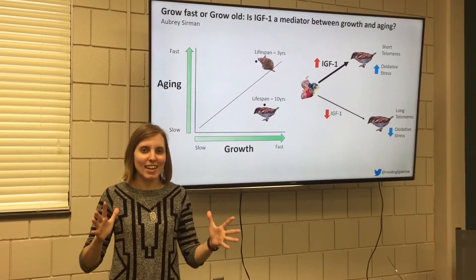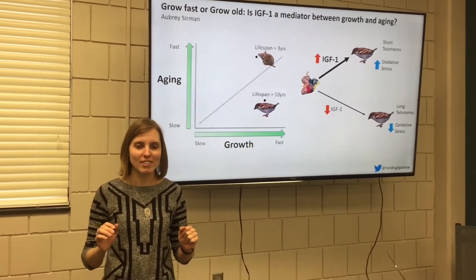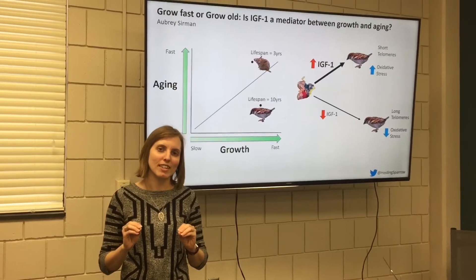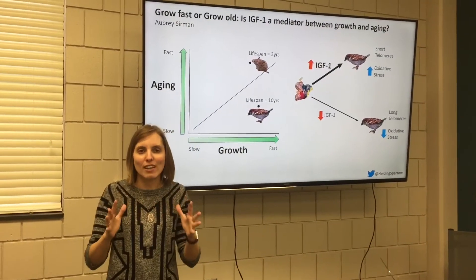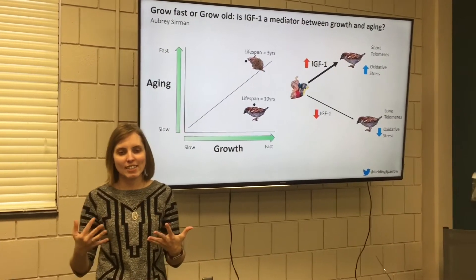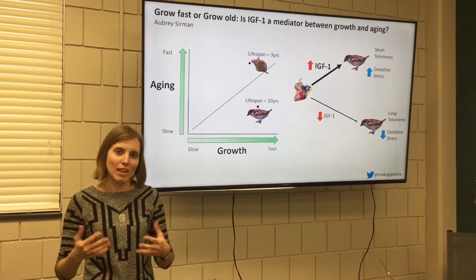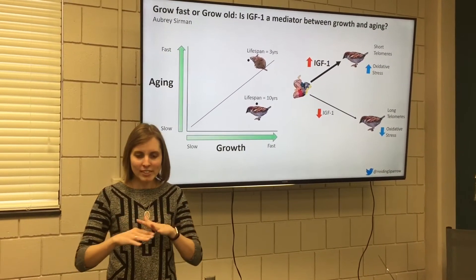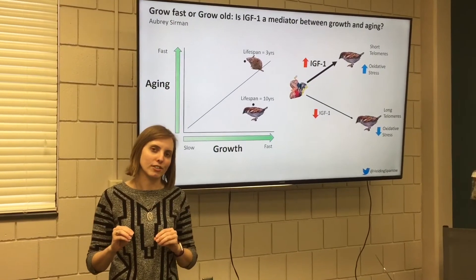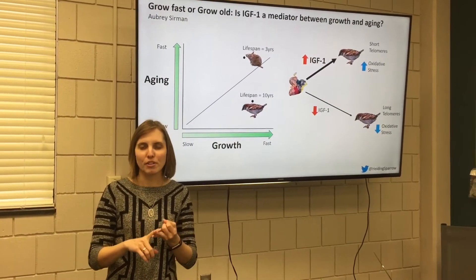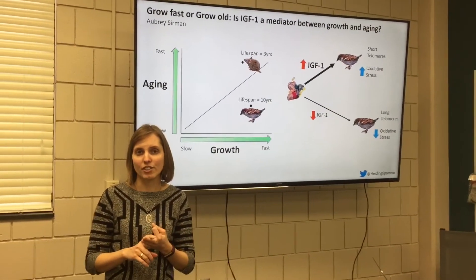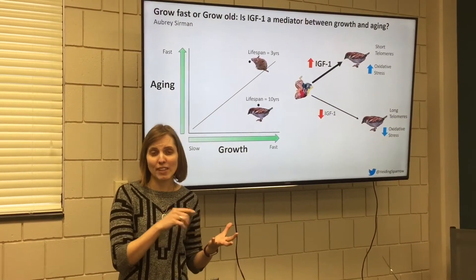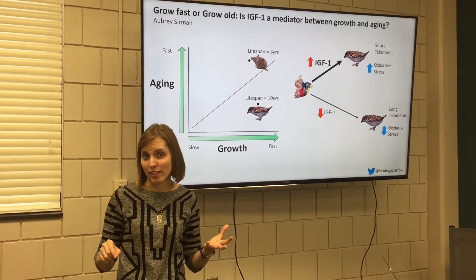Live fast, die young. We've all heard this phrase, and in fact this phrase describes a fundamental tenant of life history theory, and that's trade-offs. This is the idea that organisms have a fixed amount of resources that they have to divvy up among competing life history traits like growth, reproduction, or aging. And of course if you invest more into one trait like growth, then you have less to invest in another, like aging.